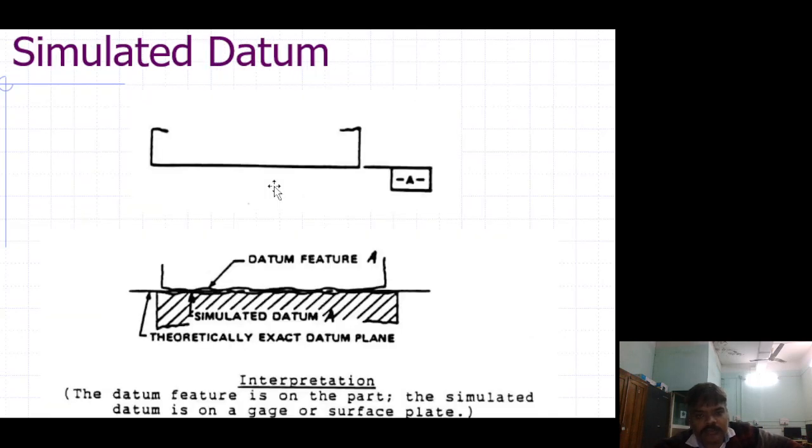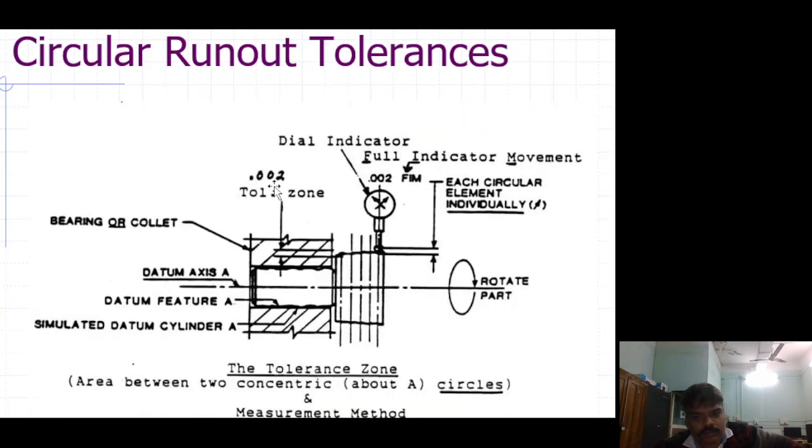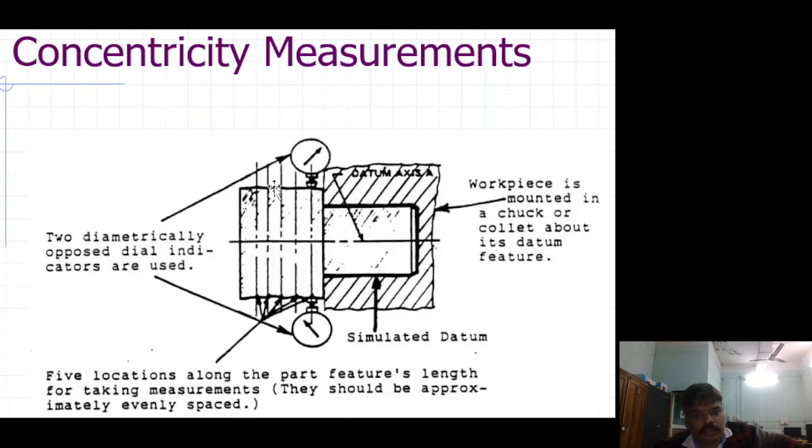So these are the different features and tolerances. Circular run-out, concentricity measurement. This is the position one, two, three, four.